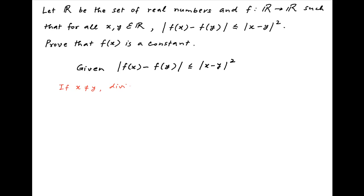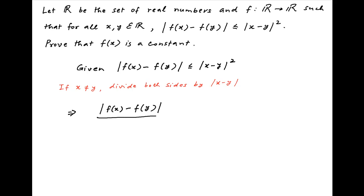So dividing both sides of the above inequality by the absolute value of x minus y, we get: the absolute value of f(x) minus f(y), divided by the absolute value of x minus y, is less than or equal to the absolute value of x minus y.